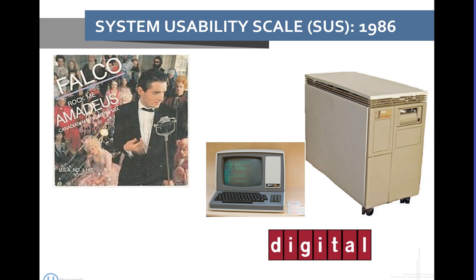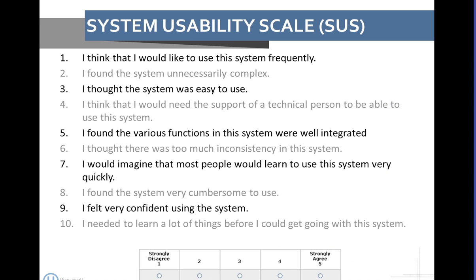I'm going to talk a little bit about 10 things you need to know about the system usability scale today. Some things if you're unfamiliar with it, as well as some things if you are familiar with it. SUS is now 26 years old. This actually came out in 1986, the same year that you had green screen computers at Digital Equipment Corporation and the same year that Falco's Rock Me Amadeus was topping the charts. I'm going to make sure it's stuck in your head through the duration of this webinar.